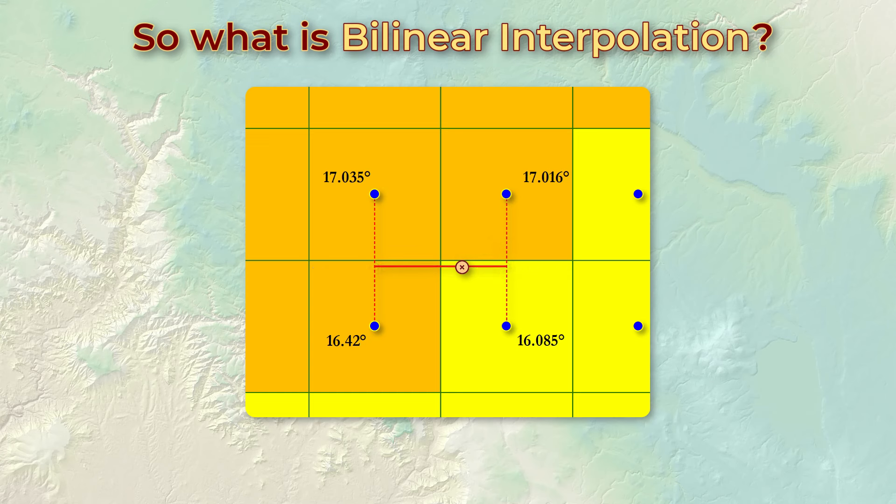Now notice that we've interpolated along two axes here, twice along the north-south axis, then once more along the east-west axis. This is where the name bilinear comes from. It interpolates along two lines, so bilinear.